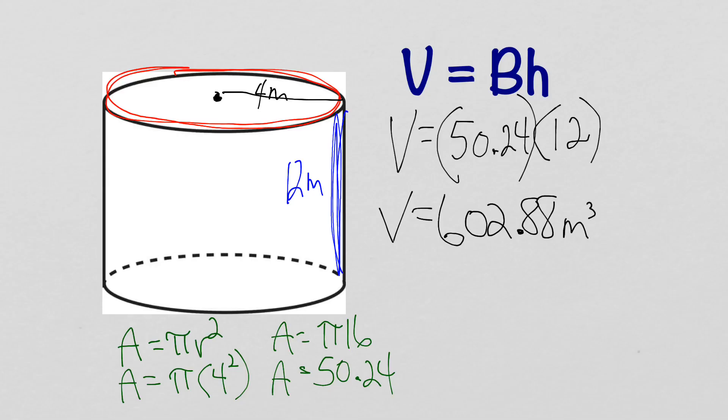We're using capital B so it can adapt to each different shape. Always identify your base first — whether that's a rectangle, triangle, or circle. Capital B is the area of that base. After finding the area of the base, multiply it by the height, which is always the length that connects the two identical bases on either end of the prism. I hope this helps — good luck this week!